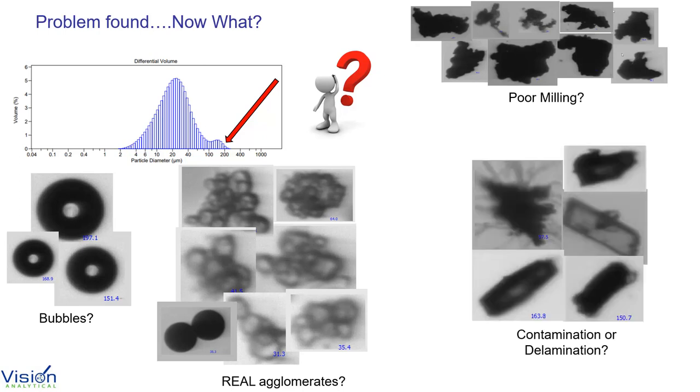What if it's contamination? What if it is something that is delaminating from the tubing? What course of action should you take at this point? How is this going to affect your final product? So, the question is, what action should you take?